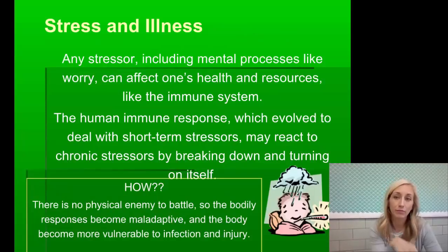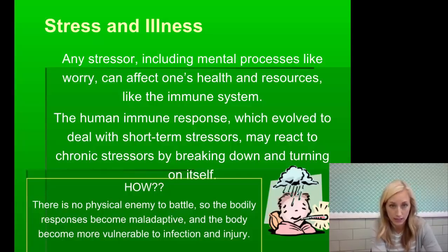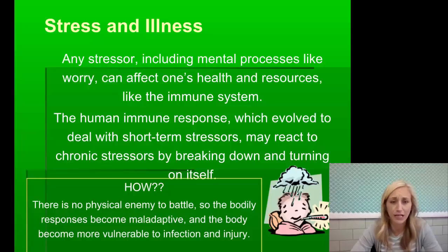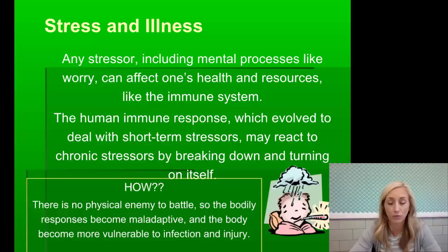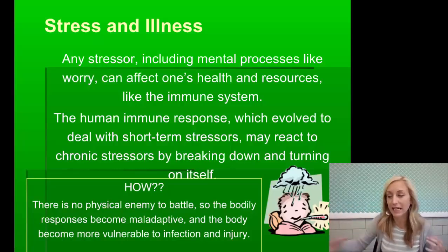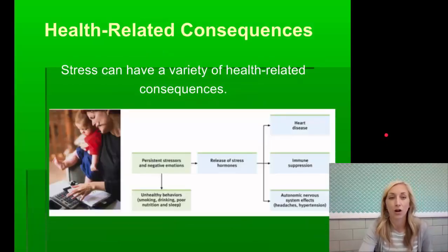Any stressor, including mental processes like worry, can affect one's health and the immune system. The human immune response, which evolved to deal with short-term stressors, may react to chronic stressors by breaking down and actually turning on itself. There's no physical enemy for the immune system to battle, so the bodily response becomes maladaptive — the body becomes more vulnerable to infection and injury. It's like it's fighting itself, so when something external like the flu comes in, it can't fight it off.